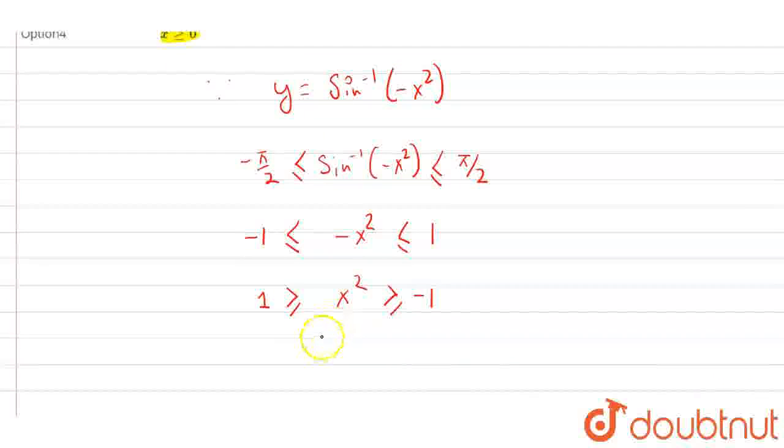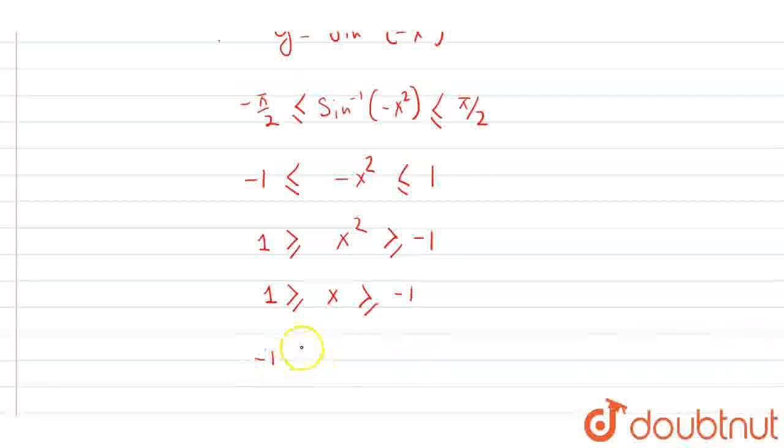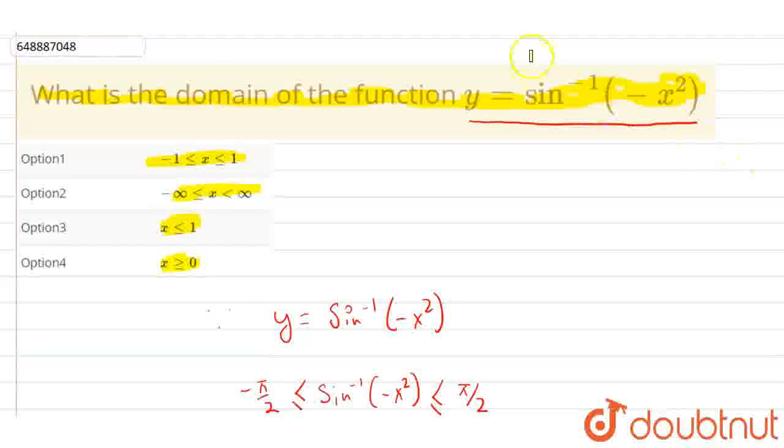Now, because we know that x is less than or equal to minus 1, basically we know that x² is less than or equal to minus 1. So, option 1 matches with our answer.